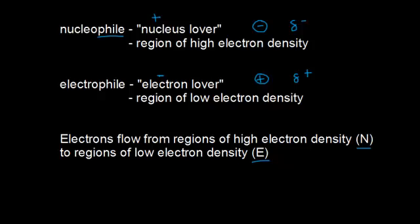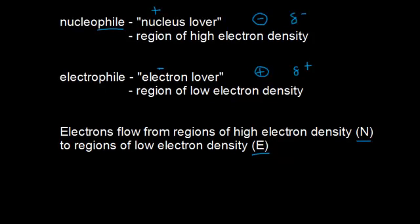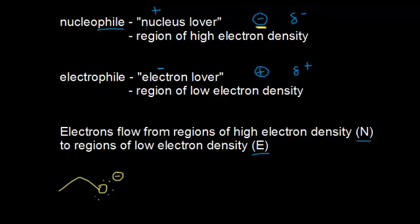Let's draw a couple of molecules and classify them as nucleophiles or electrophiles. We'll start with the ethoxide anion. The ethoxide anion is negatively charged, and since it's negatively charged, it's going to be attracted to something that is positively charged. So it's going to love nuclei — it's going to be a nucleophile and react as a nucleophile in an organic chemistry mechanism.